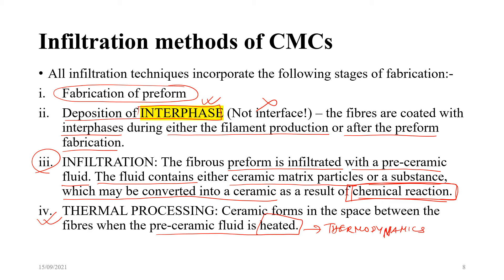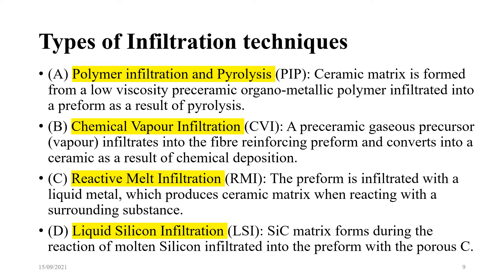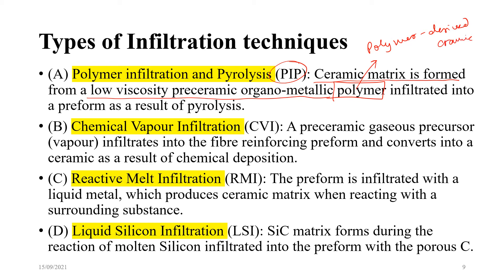Different infiltration techniques: first, polymer infiltration and pyrolysis (PIP) — widely used — where the ceramic matrix is formed from a low-viscosity pre-ceramic organometallic polymer (a polymer-derived ceramic) infiltrated into a preform and converted via pyrolysis. Second, chemical vapor infiltration (CVI): a pre-ceramic gaseous precursor infiltrates into the fiber-reinforcing preform and converts into a ceramic via chemical deposition, much similar to chemical vapor deposition (CVD).